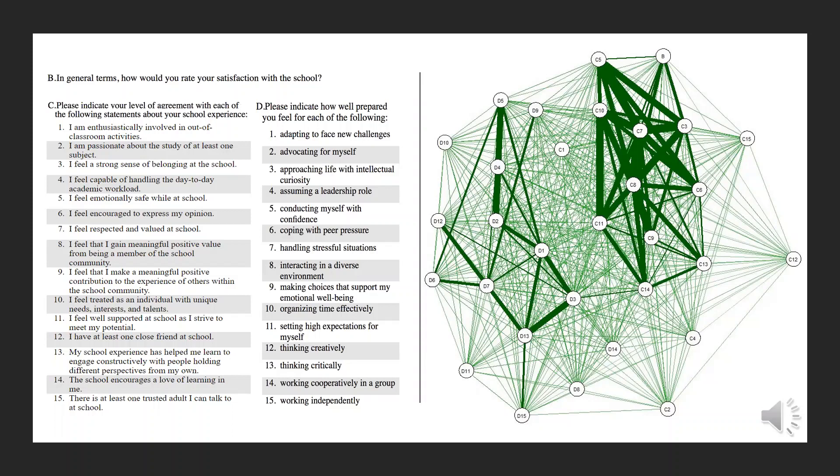In the end, we'll pull back out to 30,000 feet to reveal how the whole picture fits together. In this first slide, we can see how question B on general satisfaction fits together with section C, a series of 15 attitudinal statements, and section D on self-appraised preparedness. If you pause the video, you can look more closely at the listing of survey measures to your left.